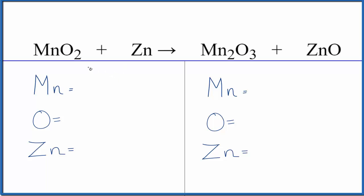So to balance the equation, let's count the atoms up. One manganese, two oxygen, one zinc.